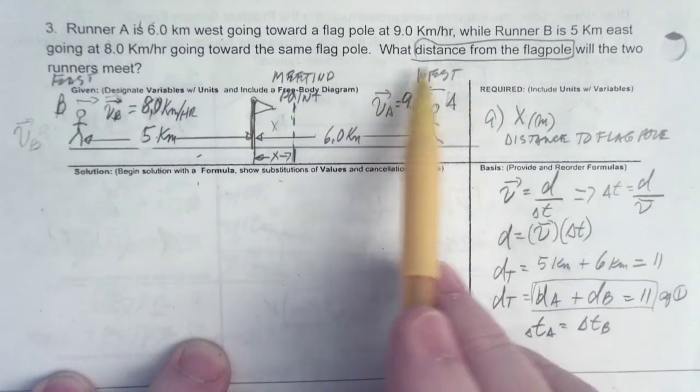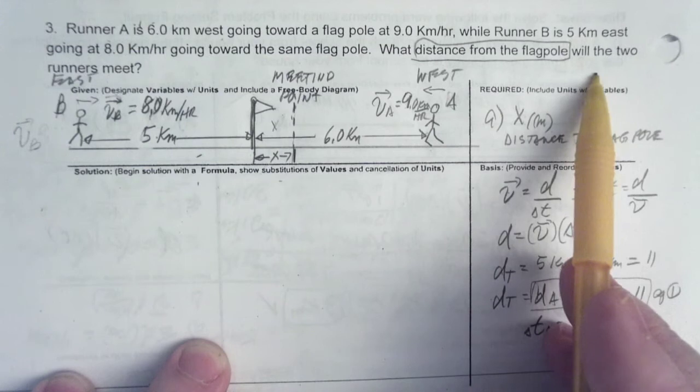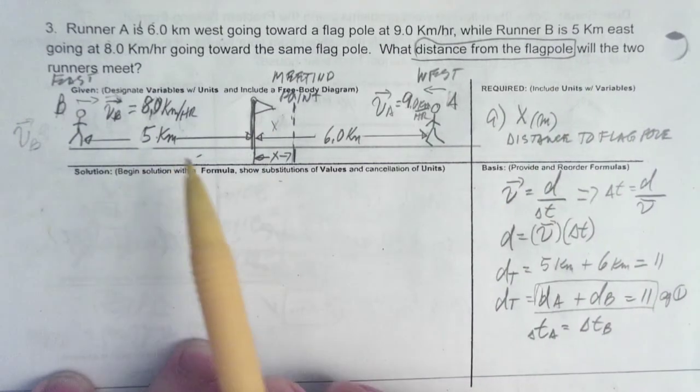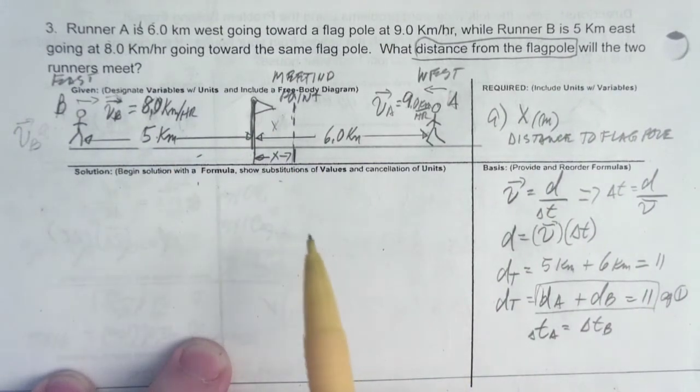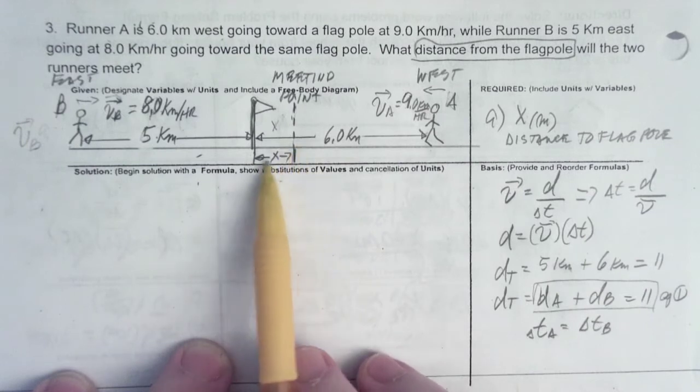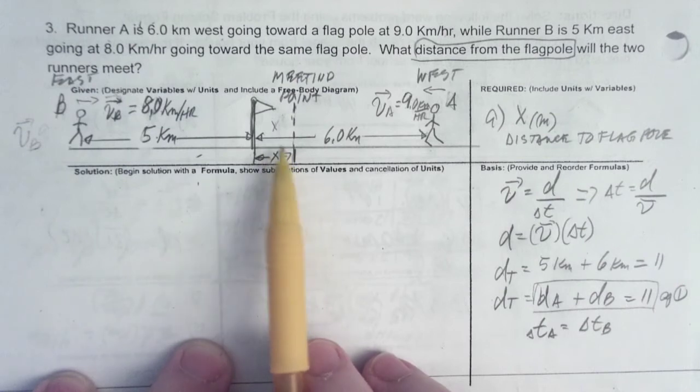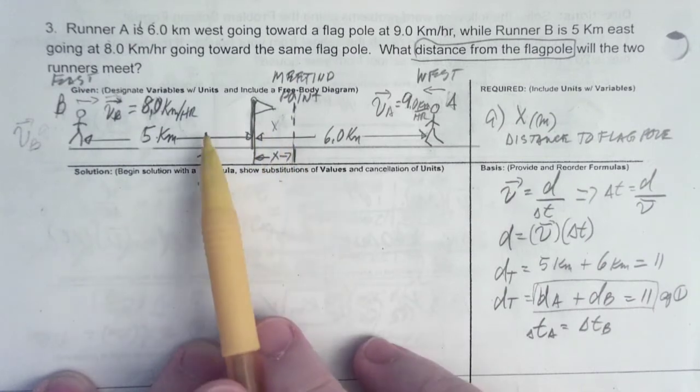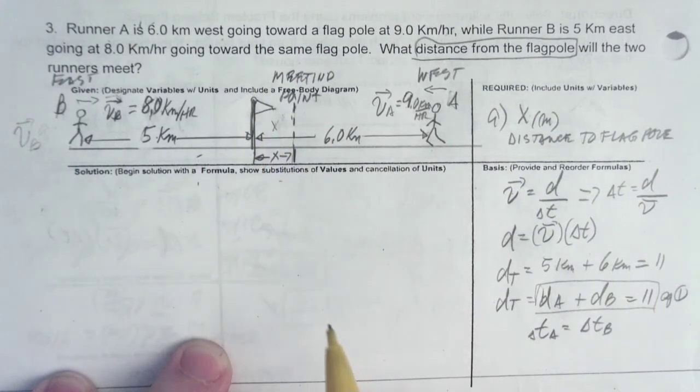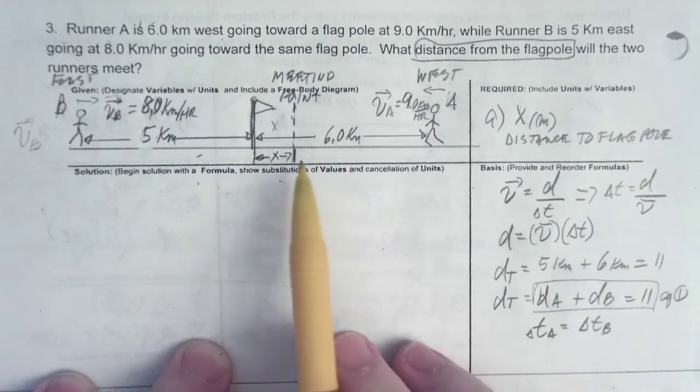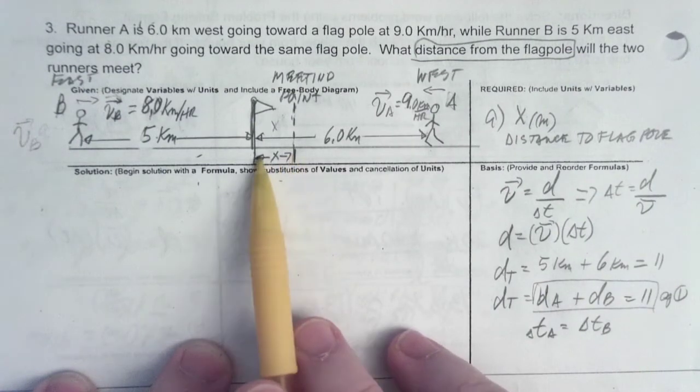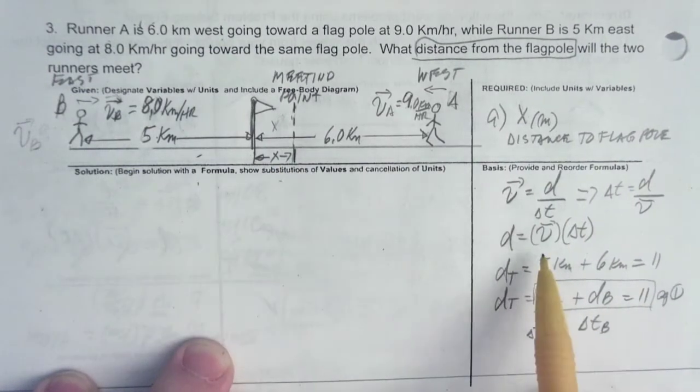So it's asking, what is the distance from the flagpole that the two runners will meet? So we don't really know. It's somewhere X away from the flagpole. Now what we do not know is if it's going to be on this side or on that side of the flagpole. Is that clear? That's the meeting point, wherever that is. And what they want to know is how far away from the flagpole it is.